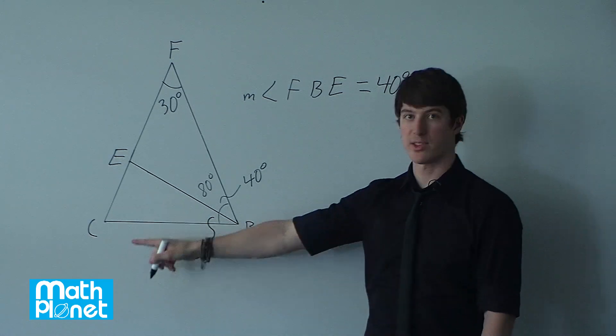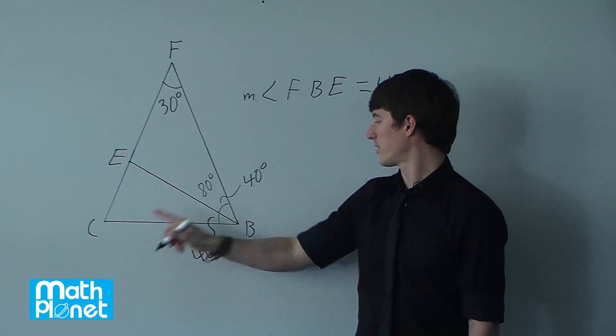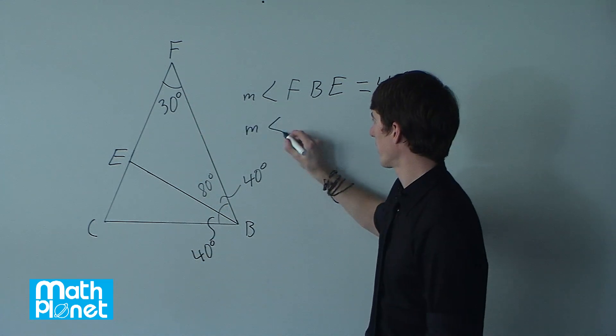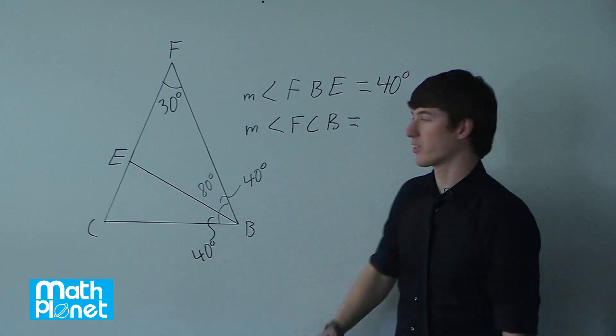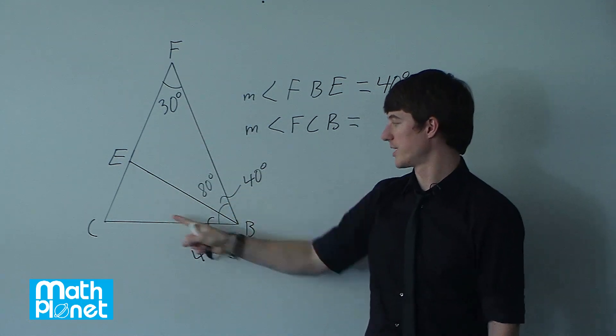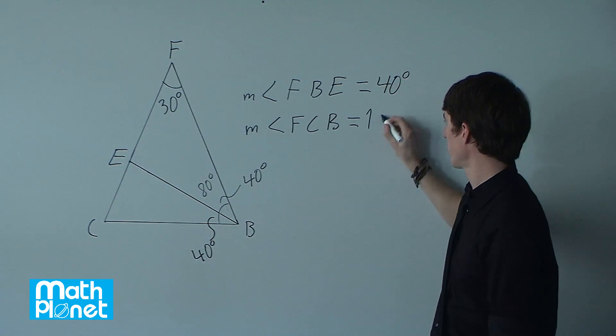And then to find C, or FCB, measure of angle FCB, well, that's straightforward enough from the fact that a triangle has a total interior sum of 180 degrees,